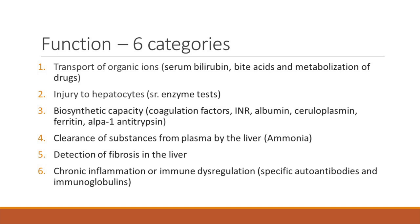When we talk about synthetic function, we talk about albumin and the coagulation factors, ceruloplasmin, ferritin, alpha-1 antitrypsin. We talk about transport of organic ions which is bilirubin, bile acids and metabolization of drugs. We talk about injury to the hepatocytes which is indicated by the serum enzyme test, clearance of substance from plasma by the liver in the form of ammonia, detection of fibrosis of liver and chronic inflammation, and immune dysregulation in which specific autoantibodies and immunoglobulins are produced.